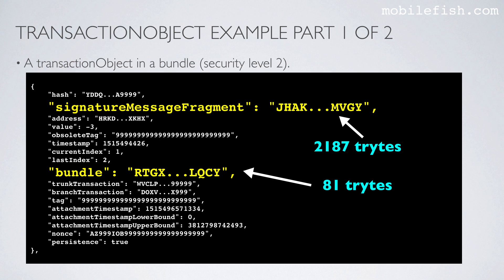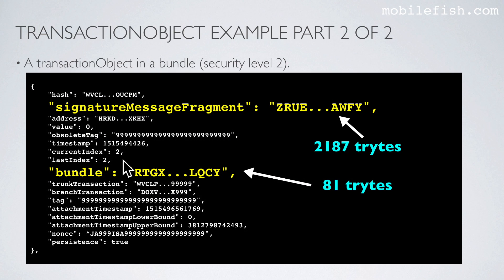Now I will show you how a signature is validated. To validate a signature in a transaction bundle, extract all corresponding signature message fragments from the bundle. Depending on the selected security level you will have 1, 2 or 3 signature message fragments. The combined signature message fragment is called the signature. For example, using security level 2, this is the first signature message fragment and this is the second part of our signature message fragment. Our signature consists of both. Next we need to extract the bundle hash, which is the same as the bundle hash used when creating the signature.